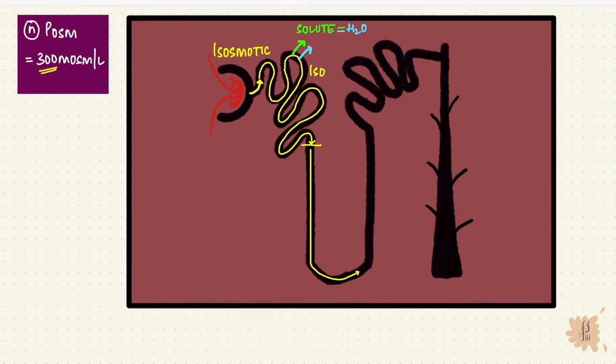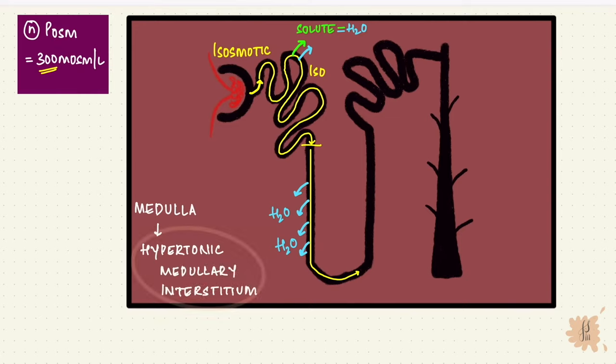Next comes the thin descending limb of the loop of Henle. I told you that the loop of Henle is in the medulla. So the descending limb is less permeable to solutes, but is very permeable to water. It reabsorbs water into the hypertonic medullary interstitium. Now keep this in mind, because I'm going to come back to it and tell you why it is hypertonic. So since water is getting reabsorbed, the osmolarity of the urine increases until it reaches equilibrium with the medulla. So the fluid is getting concentrated from the loss of water.